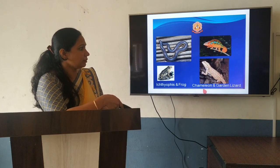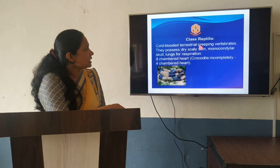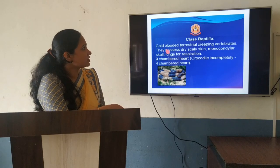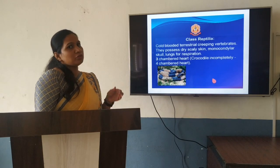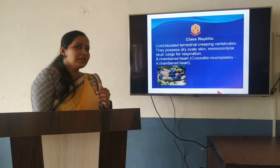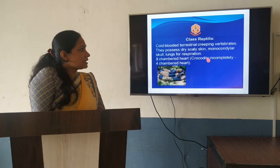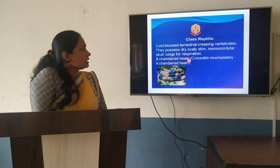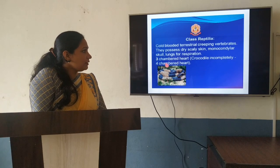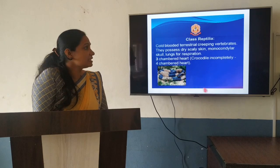Next class is class Reptilia — you can see chameleon as well as garden lizard. They are cold-blooded and normally terrestrial organisms, with an exception for the crocodile. They possess dry, scaly skin and their skull is monocondylar. They have lungs for respiration and a three-chambered heart, except the crocodile which has a four-chambered heart. Limbless reptiles are snakes.